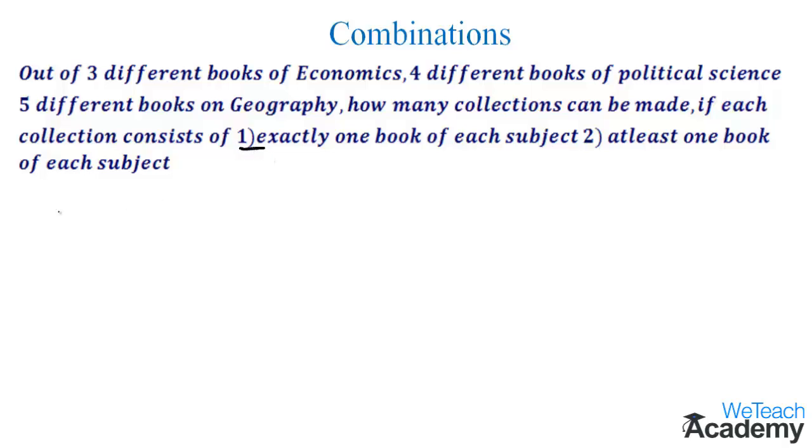Out of three different books of economics, we can choose one book in 3C1 ways. And out of four different books of political science, one book can be selected in 4C1 ways. Similarly, we can select one book from the five books of geography in 5C1 ways.